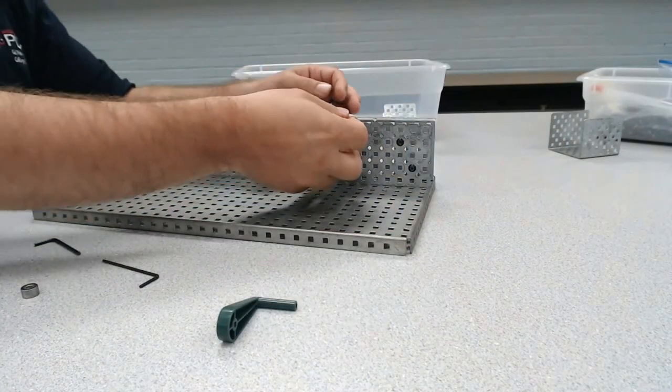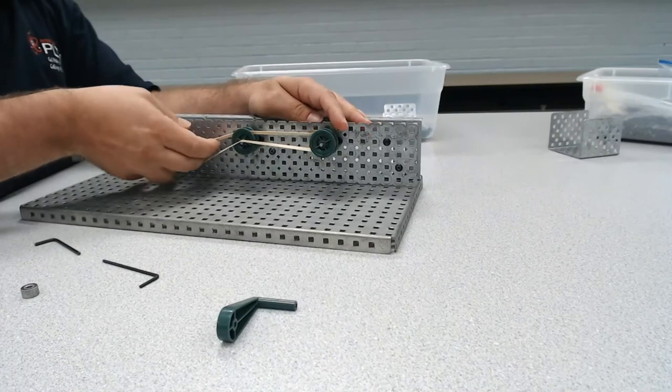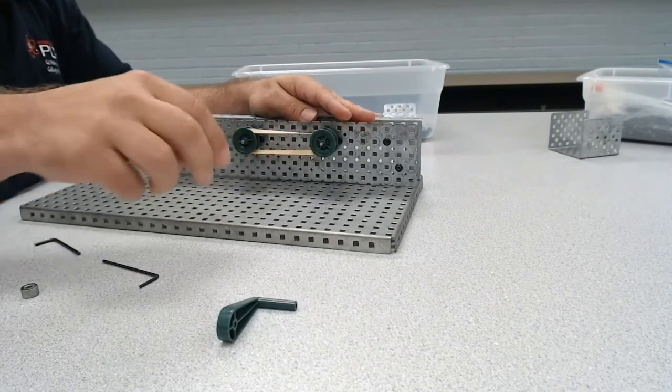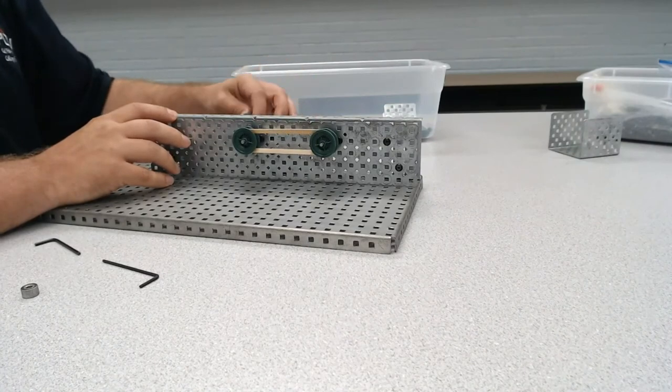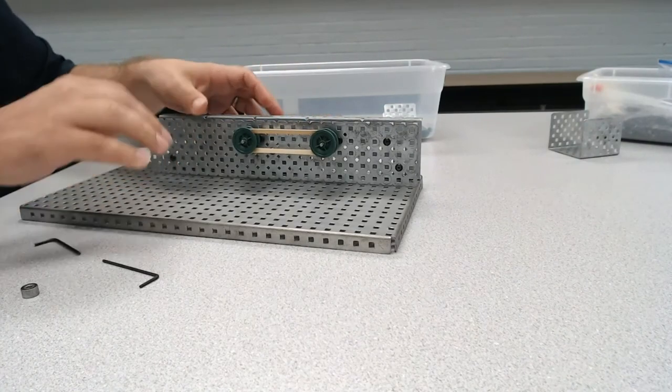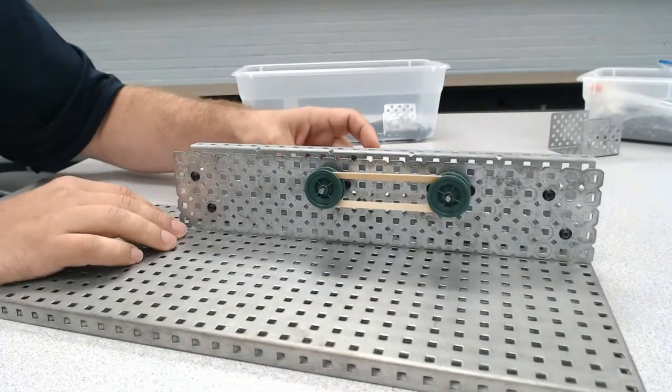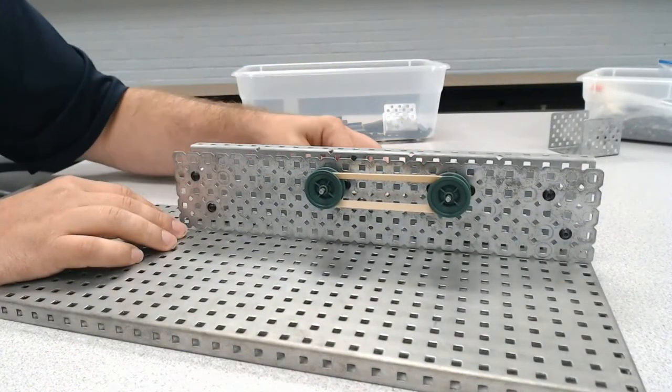And then all I need to do is run a rubber band between these. And here is my belt drive. Move that forward a bit so you can see it. So there is a working belt drive.